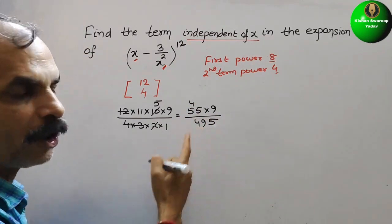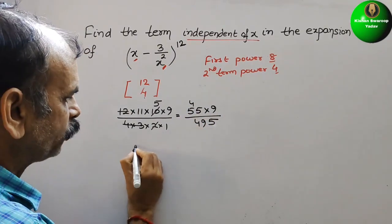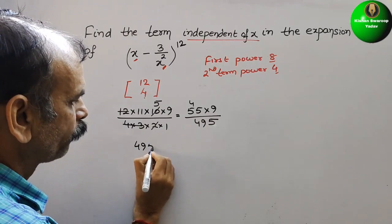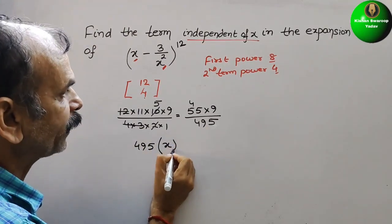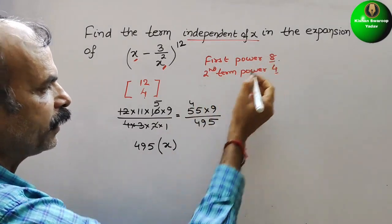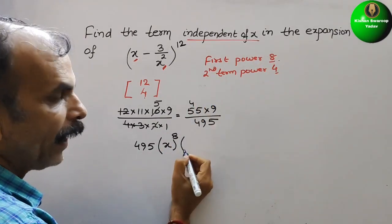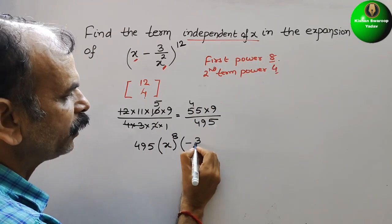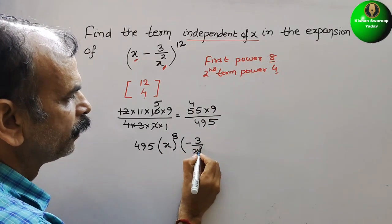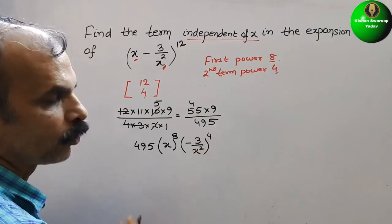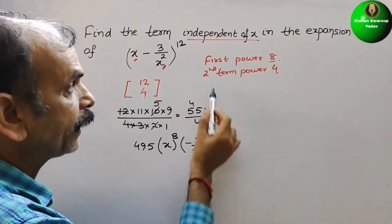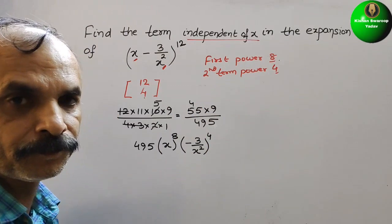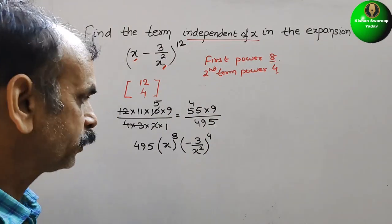So here this is your initial coefficient, that is your 495. Then multiply it by the first term that is your x and the power is 8. And for the second term it is minus 3 by x square and the power should be 4. The sum should be total, that is your 12.